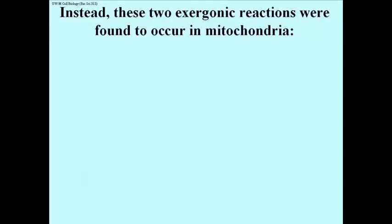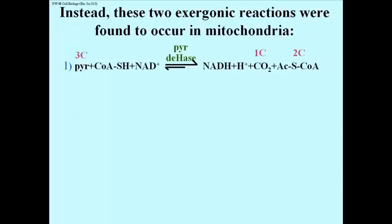Instead, much later in the 1950s, these two reactions, both exergonic, were discovered in the mitochondrion. The first one is the oxidation of pyruvic acid by the enzyme pyruvate dehydrogenase. As you can see, it's an exergonic reaction.